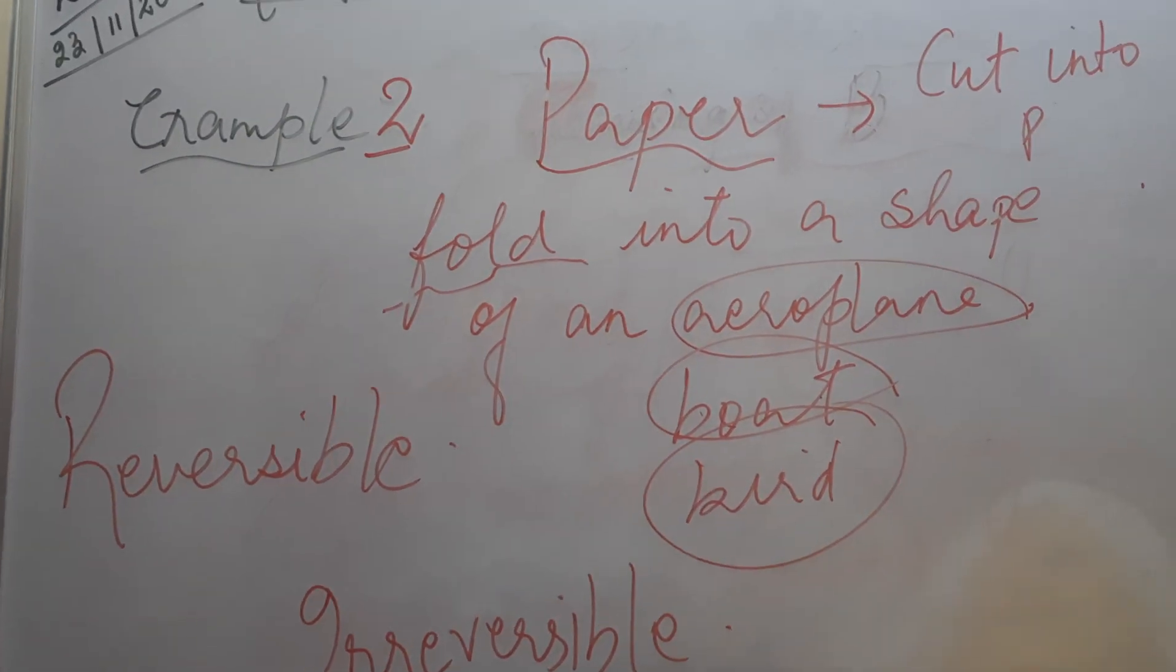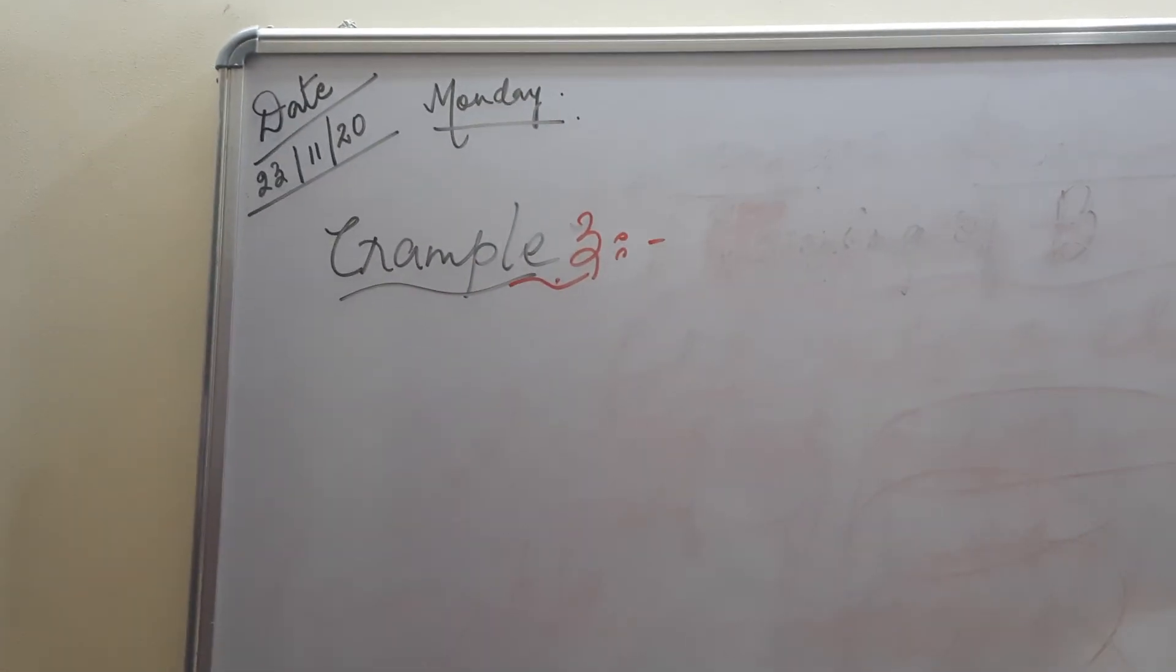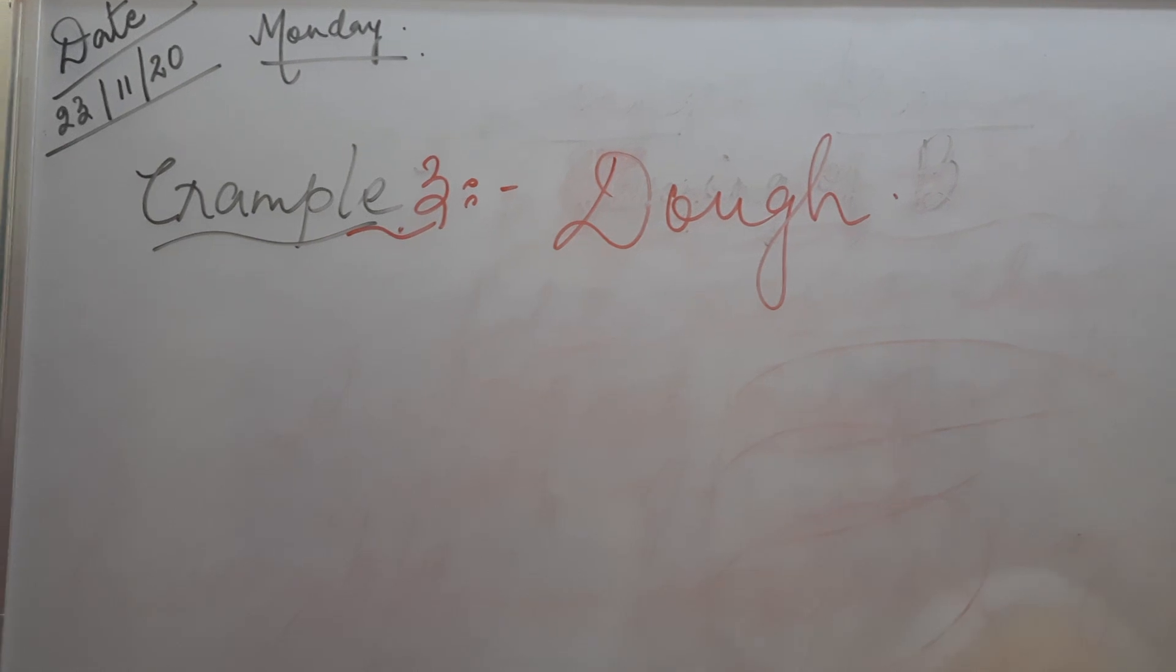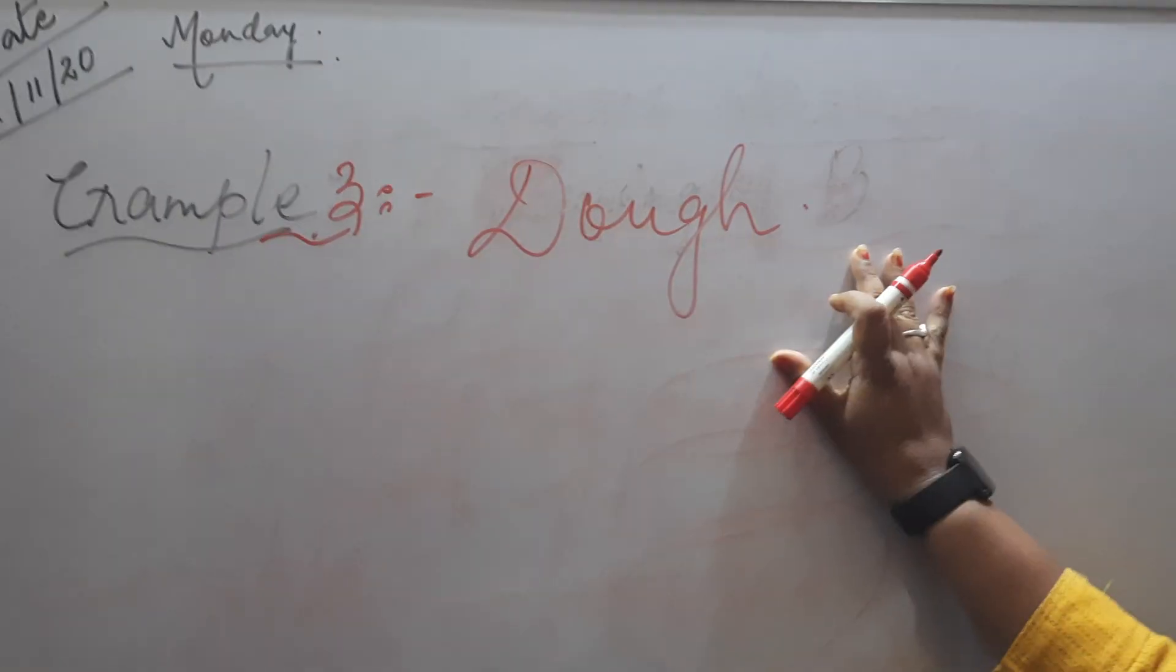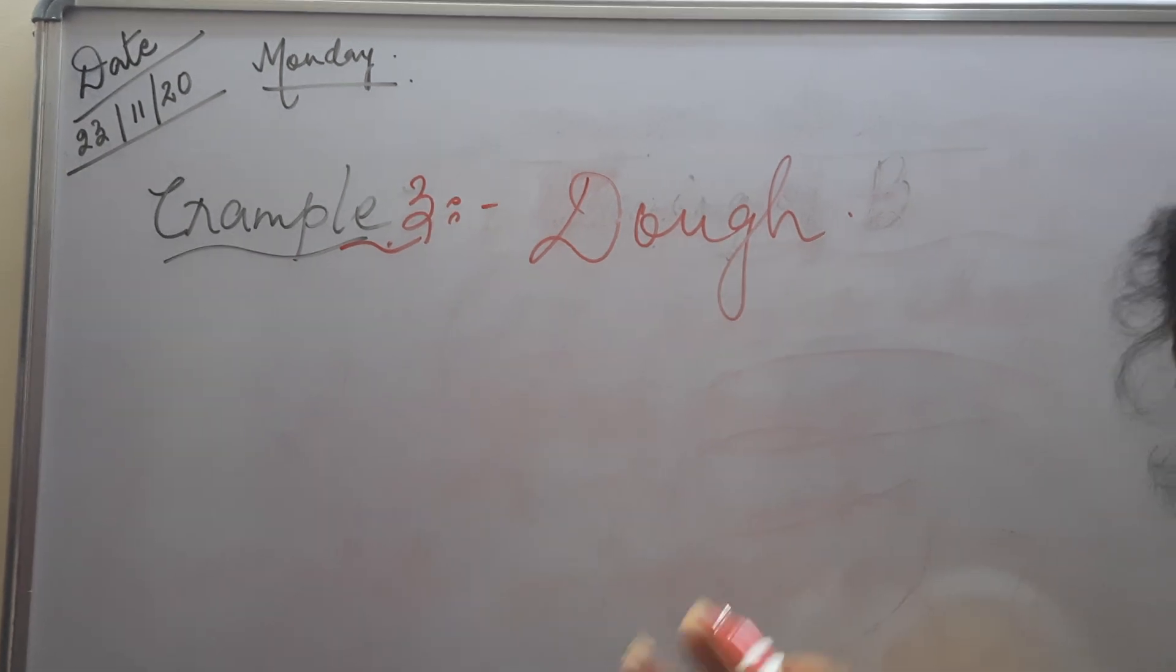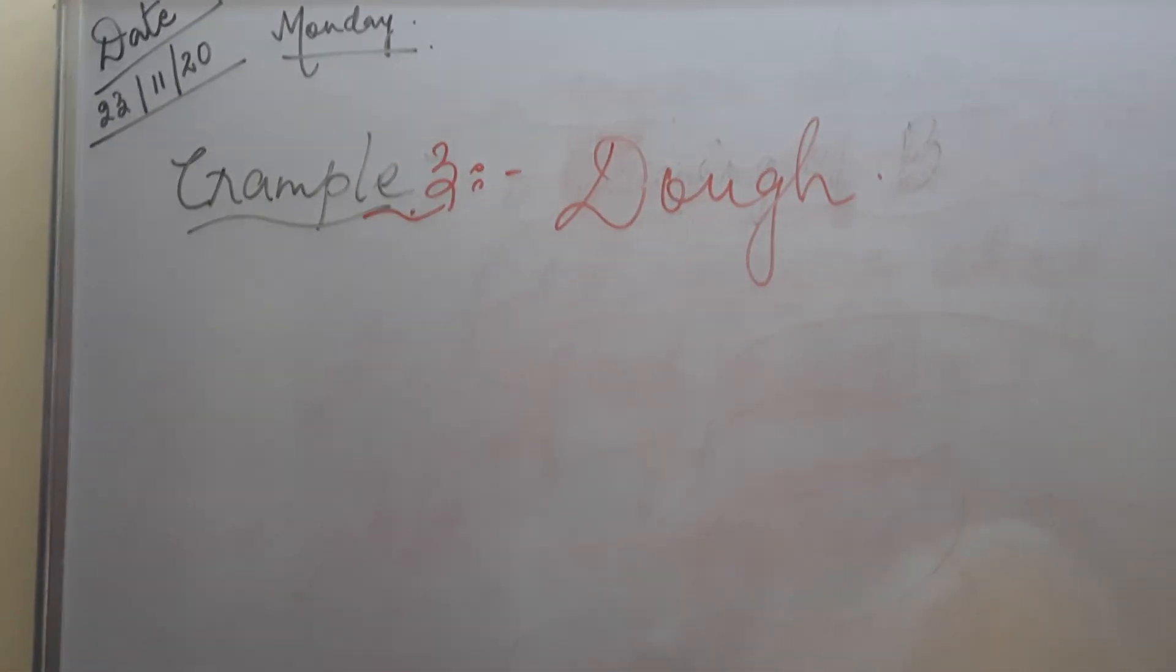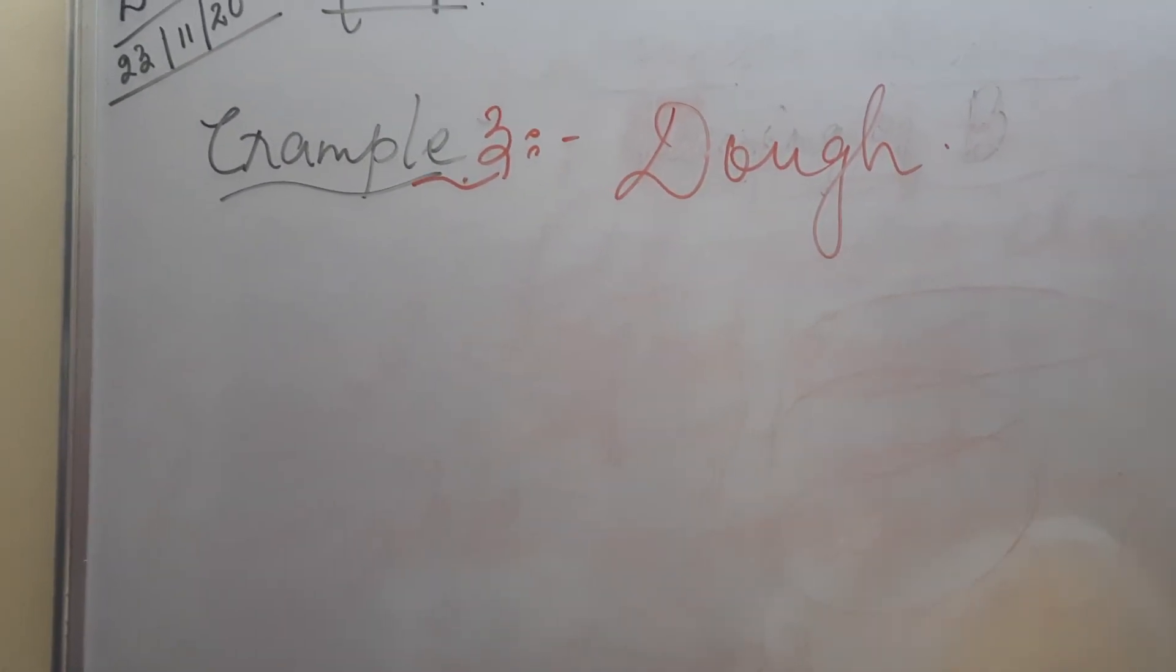Let's see, children. Example number three. Example three is a dough. Dough instance, if you take some amount of flour and you make dough. Dough means aate ko gundhara, jisko bolte hai. Got it? So, the dough is ready. Dough is ready means tumnei aate ko gundh liya jab. Now, you can make any shape. For example, if your mother wants to make a chapati, she will give a round shape. If you want to play with that dough, you can give any shape.